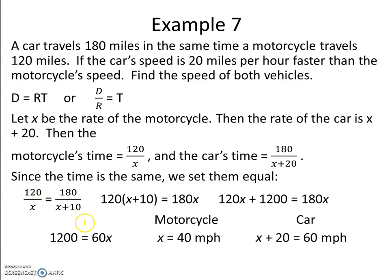So we're cross-multiplying. We have 120 times x plus 10, which gives us 120x plus 1200, which equals 180x.